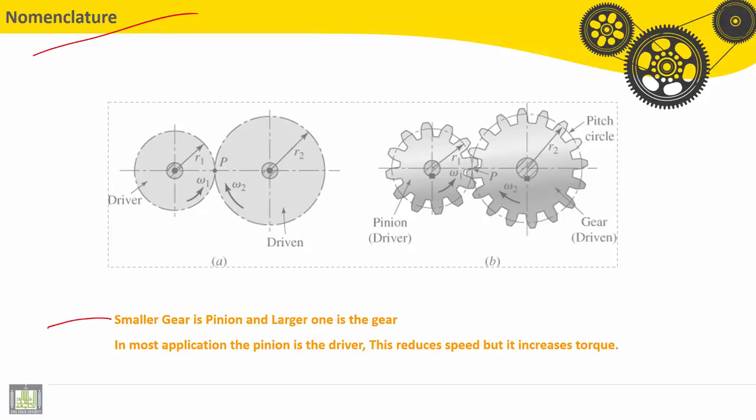Usually the smaller gear is the pinion and the larger gear is the gear. In most applications, the pinion is the driver. This will reduce speed but increase torque.